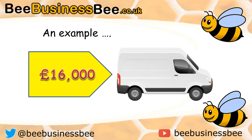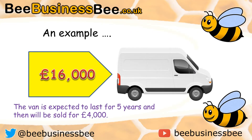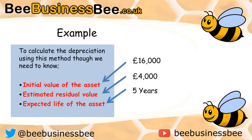So let's take a look at an example. Here is my van. As you can see, it cost me £16,000 when it was new. The van is expected to last for five years and will be sold for £4,000. We can now take that information and actually calculate the depreciation using the straight line method.